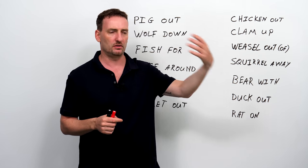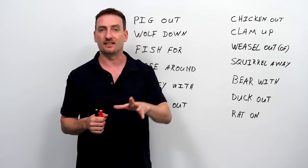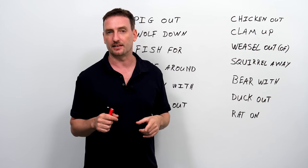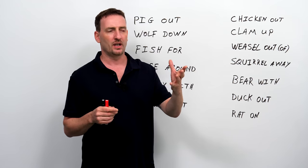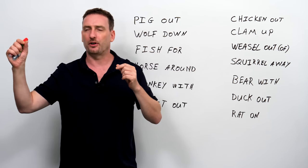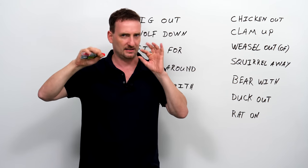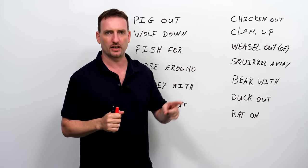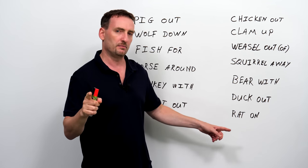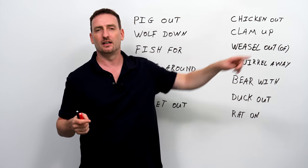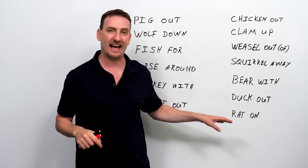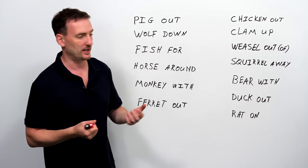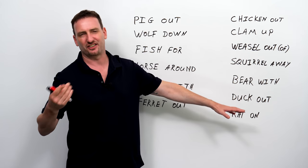If you rat on someone, it means you tell about them. They have a secret or they did something bad, and you tell the police, oh, this guy did it, or that person did it. Or if the teacher is writing something on the board, and in the back he or she hears some giggling, and the teacher turns around and says, who did that? And then one boy or one student says, oh, he did it. So that first boy rats on the other boy and gets the other boy in trouble.